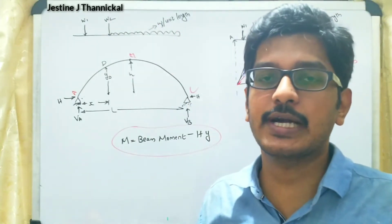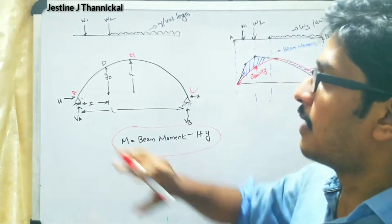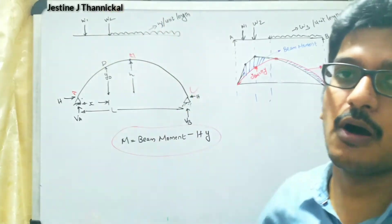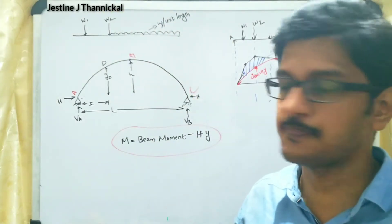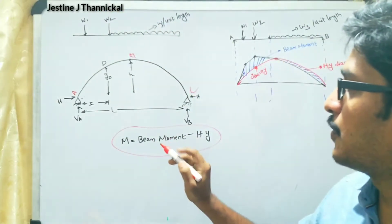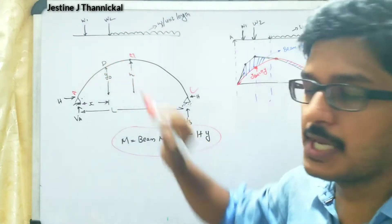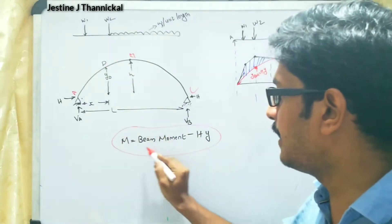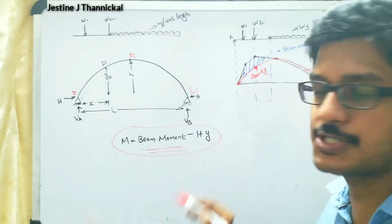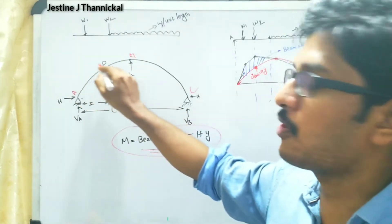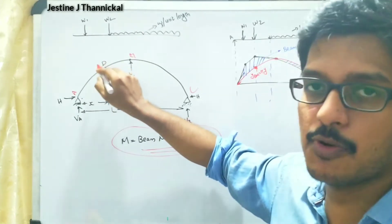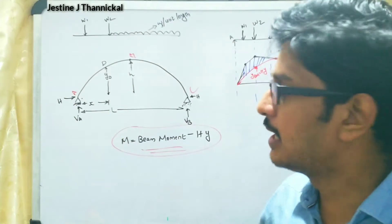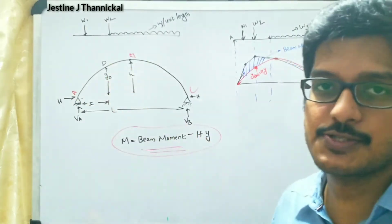First of all, you have to consider this arch as an equivalent beam — that is, if these loads are acting over a beam, how to draw a BMD diagram. If you want to find out the bending moment at point D, the value will be the beam moment minus H multiplied by Y_D.